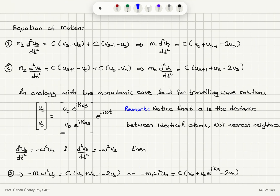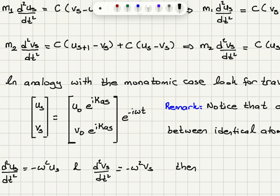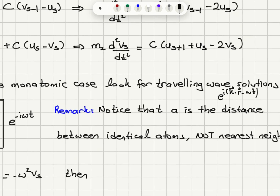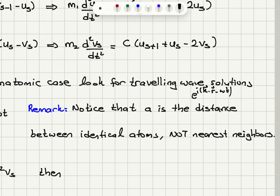In analogy with the monatomic case, we look for traveling wave solutions of the form e^(ik·r − iωt). So Us will be of the form U0·e^(ikas)·e^(−iωt), and Vs will be of the form V0·e^(ikas)·e^(−iωt). Note that the lattice constant A is not the distance between neighboring atoms, but the distance between identical atoms.